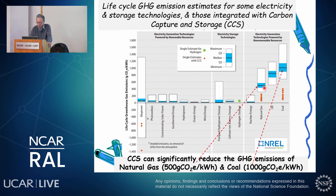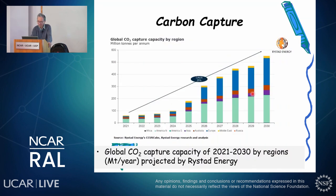We cannot totally do away with fossil fuels in the near term, so carbon capture and storage (CCS) facilities can help. CCS can reduce greenhouse gas emissions from natural gas and coal by as much as 80–90%. Carbon capture capacity has been rising quickly and based on projections could increase by over 500% in the next 10 years.